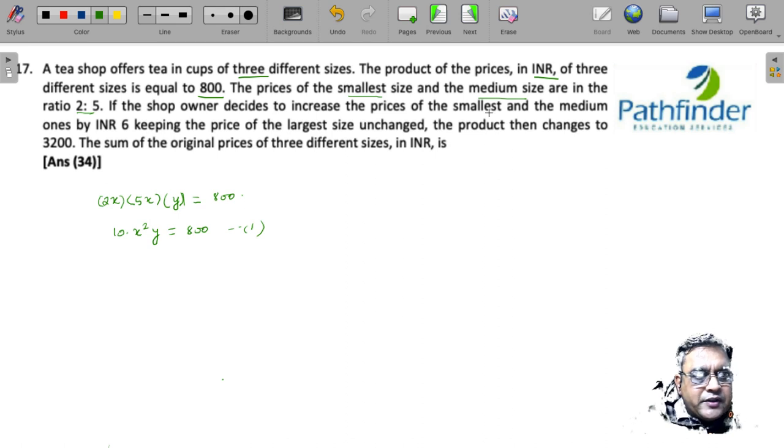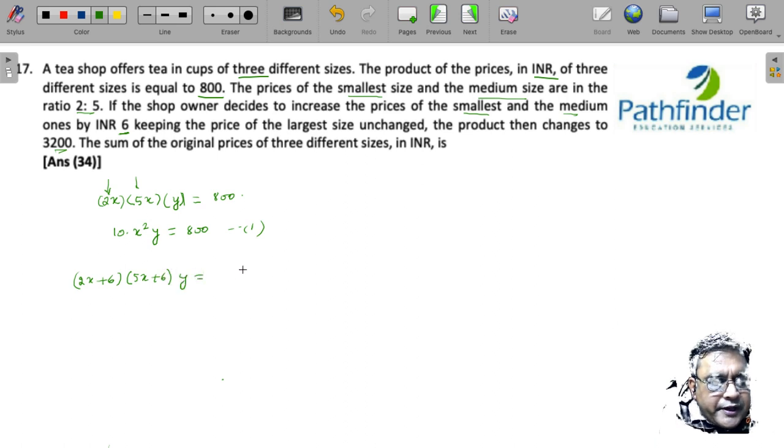If the shop owner decides to increase the prices of the smallest and the medium by 6 rupees, you will get 2x + 6, and then the product changes to 3200. So you will get (2x + 6) into (5x + 6) into y must be equal to 3200.